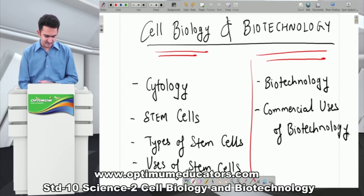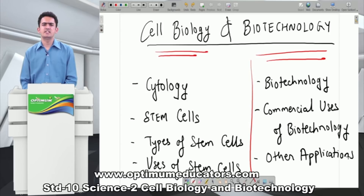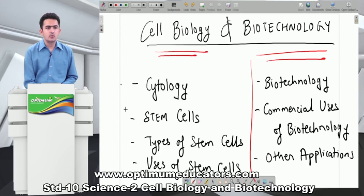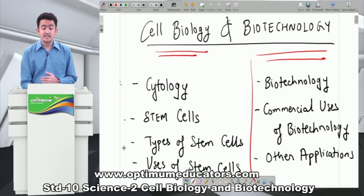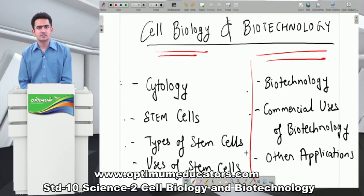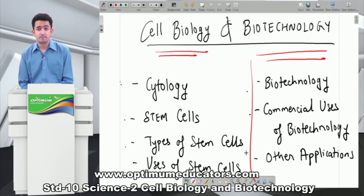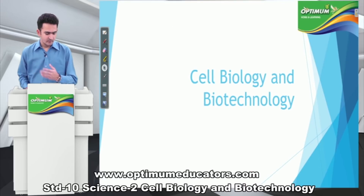Lastly, we will cover other applications of biotechnology — a small section on the future of biotechnology and what small things we are able to do. So the chapter covers: cytology, stem cells, types of stem cells, uses of stem cells, the concept of biotechnology, commercial uses, and other applications. Students, you can pause your screen and take notes before we start.